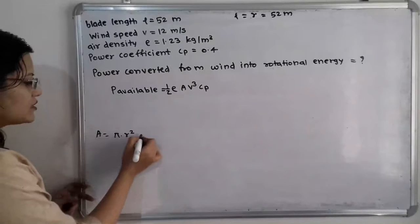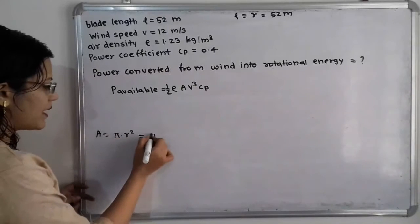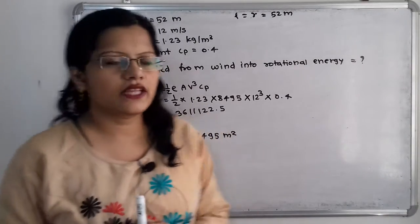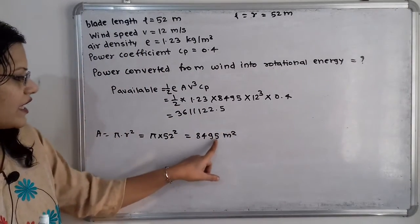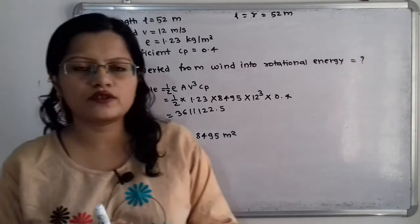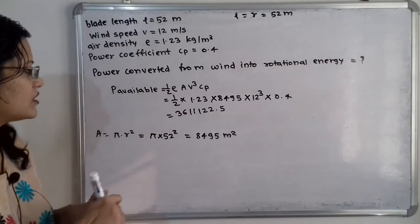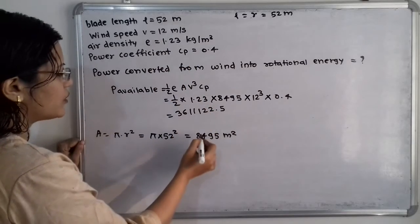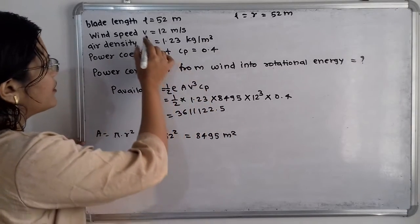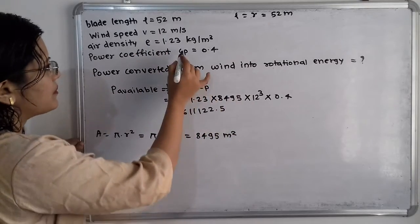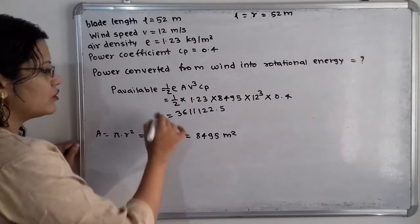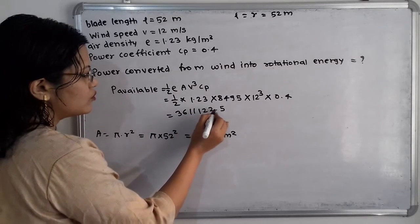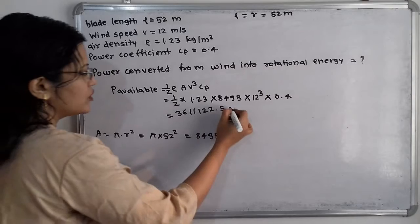The formula is P available equals half rho A V cube Cp. The area A equals pi into R square, which is pi into 52 square, giving 8495 meter square. Putting in all values: half into 1.23 into 8495 into 12 cube into 0.4 gives an answer of 3,611,122.5 watts.